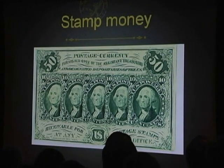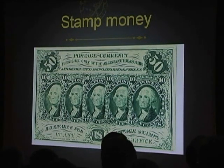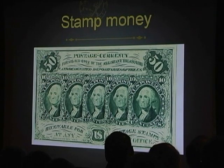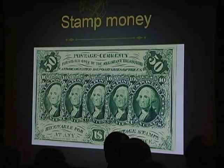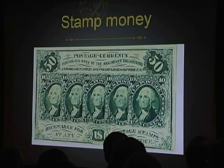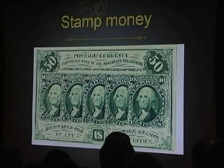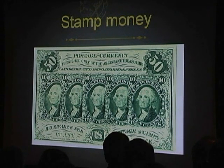There was a shortage of metals in the Union to make coins because so many had been taken in for war supplies. For a while, small change was made by printing stamp currency in low values up to the 50 cent. We should remember that at this time, 50 cents was a day's wage for many laborers.